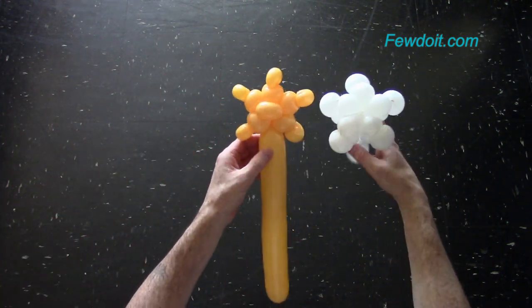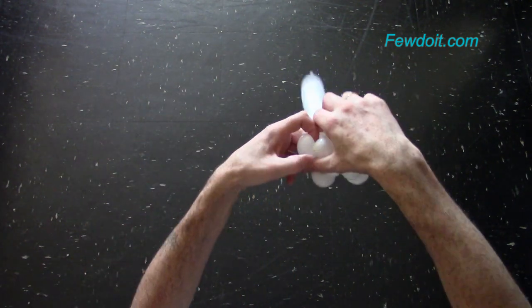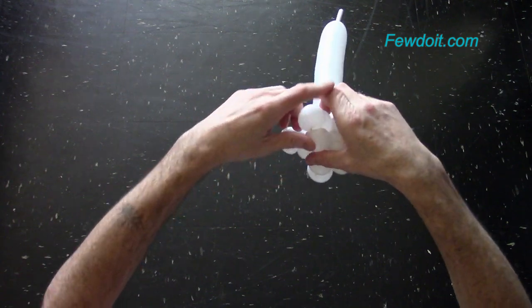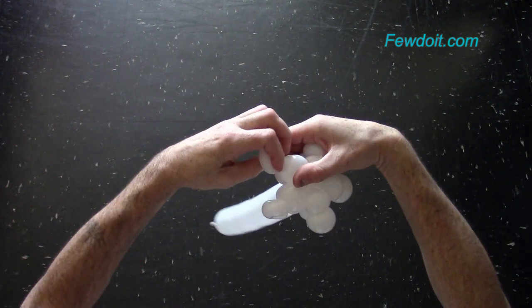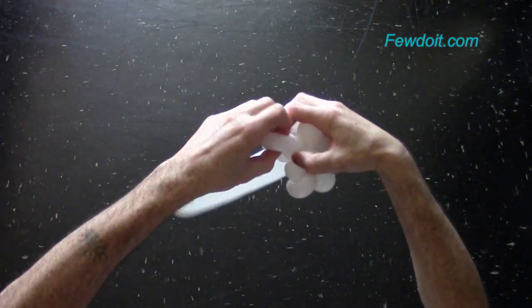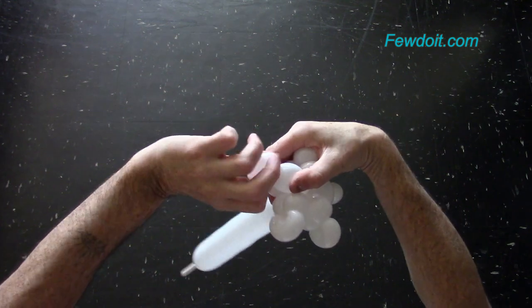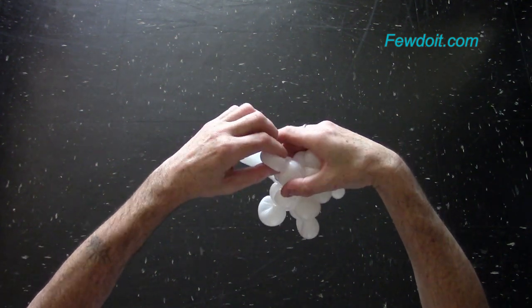If you have any flat tail left, you just squeeze the rest of the balloon to get rid of the flat tail and use it as a bond. Now I'm going to lock both ends of the second bubble of each section to make the pointy ends of the star or the snowflake.